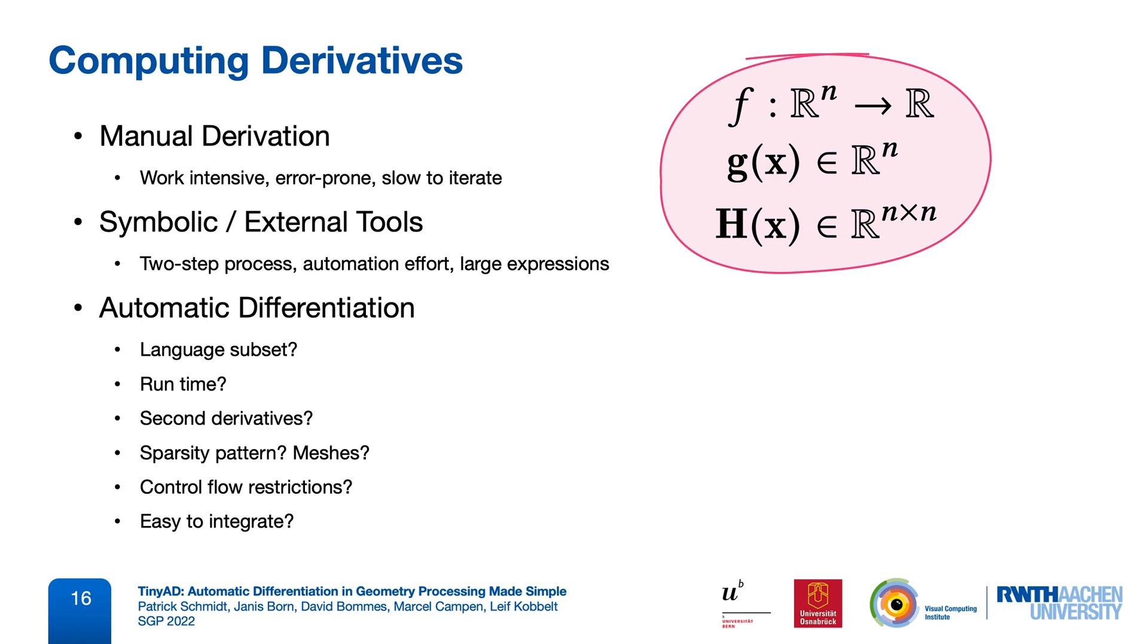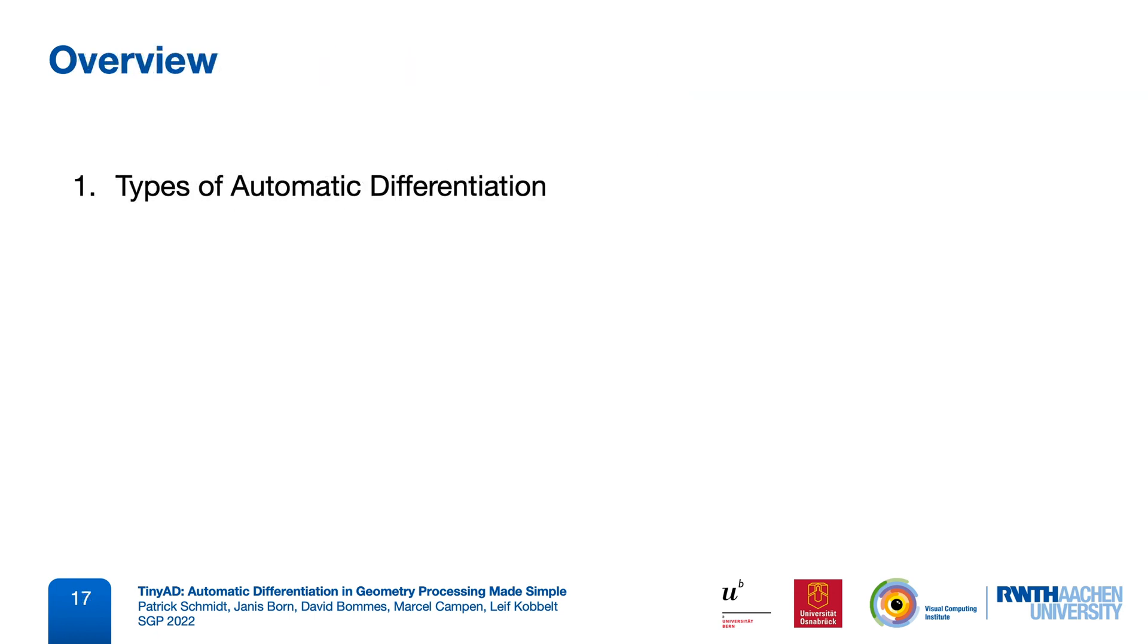We believe that geometry processing research could really benefit from an easily accessible tool that is tailored specifically to our use case. In particular, to computing sparse Hessian matrices of mesh-based problems. So, we looked at different approaches to automatic differentiation, and our key insight is that actually the simplest and most straightforward approach is the one that works best in our case.